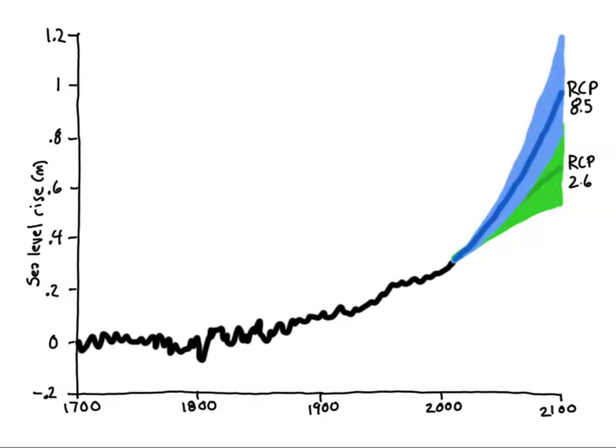Our models indicate that RCP 8.5 will likely produce something like three-quarters of a meter of sea level rise by 2100, whereas RCP 2.6 would keep it to a little under half a meter. Again, there are significant ranges of uncertainty around these predictions.